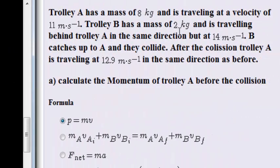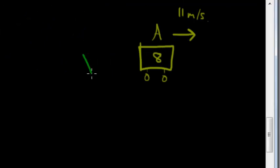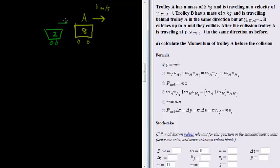Trolley B has a mass of 2 kilograms and is traveling behind trolley A. So 2 kilograms means it's a little bit smaller. There's trolley B, it is 2 kilograms, and it is traveling in the same direction but at 14 meters per second. Obviously, it's going to catch up because it's traveling faster.